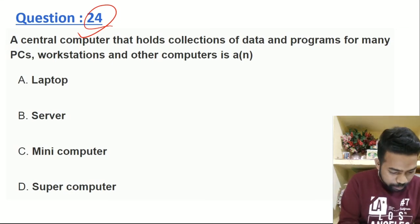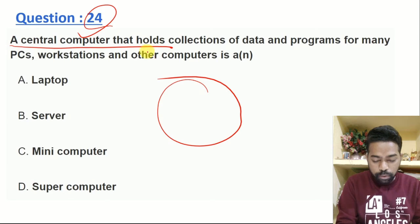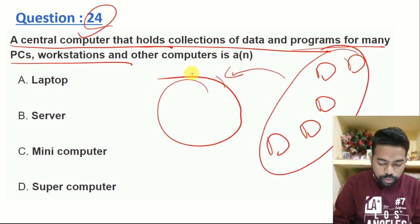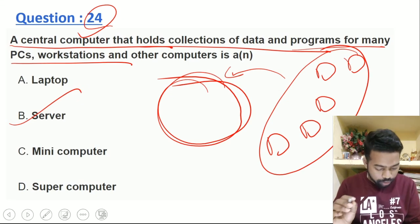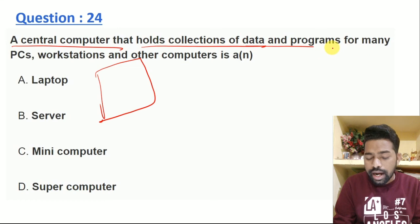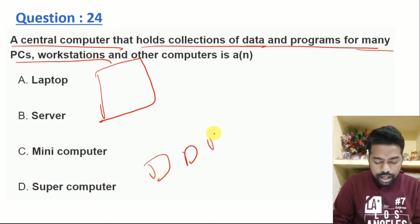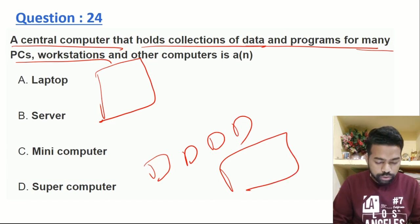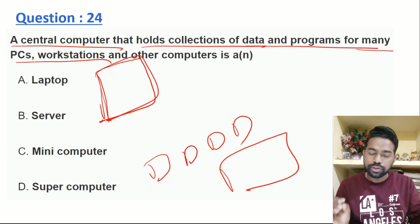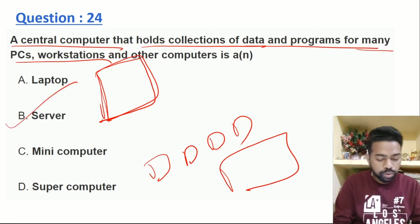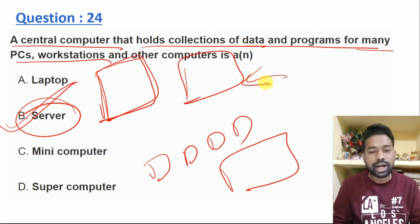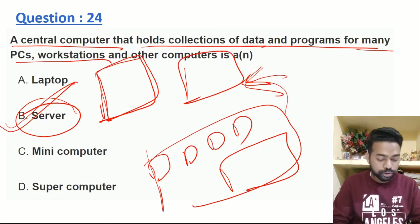A server is a central computer. It holds the collection of data and programs for many workstations. It is a very big computer and the data is very much more expensive. The server is the important question. In Facebook, where we have data, we have all the servers where we upload and store. All official organizations have a server room. From this server room, all the data is stored.